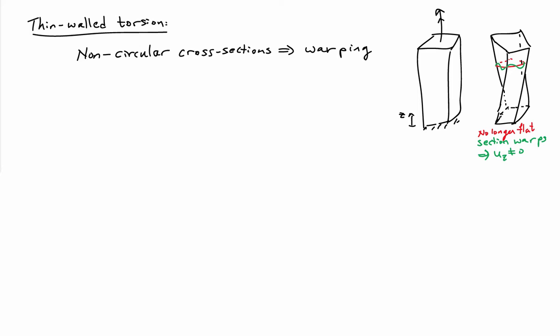So in our kinematic assumption for the circular case, you have this situation where the cross-section rotated as a rigid body and plane sections remain plane. If you have a bar that's non-circular, so for example a square bar and you twist it, the cross-sections, if you look at them, they move in the z direction. As shown here in green, they kind of move up and down. They're no longer flat.